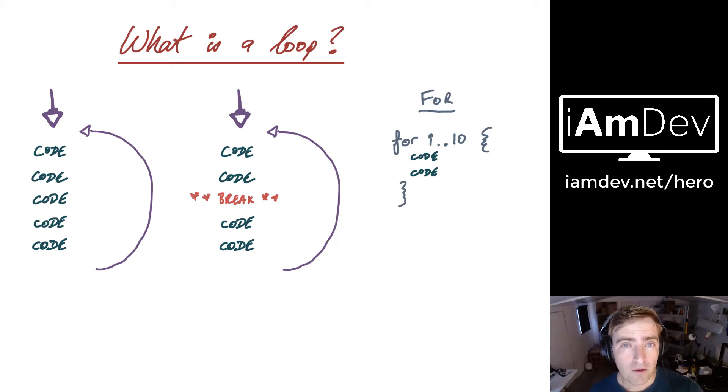So in this case we have a for loop which goes from i to 10, and i in this case would be 0. Some languages ask you to explicitly say that.